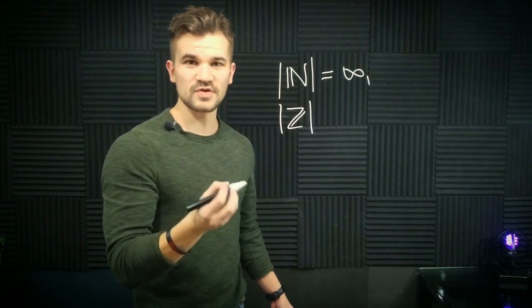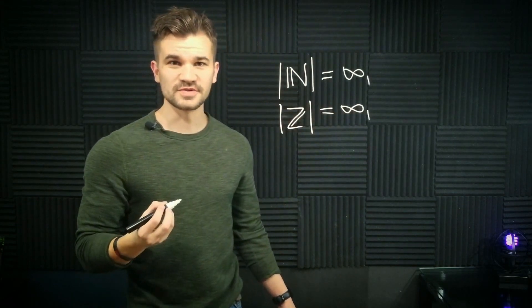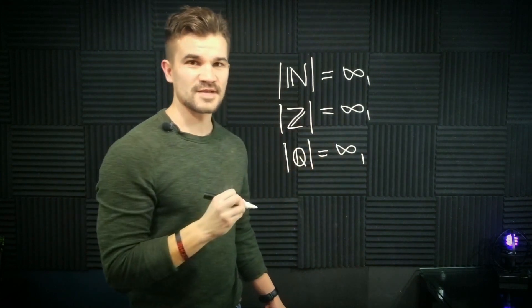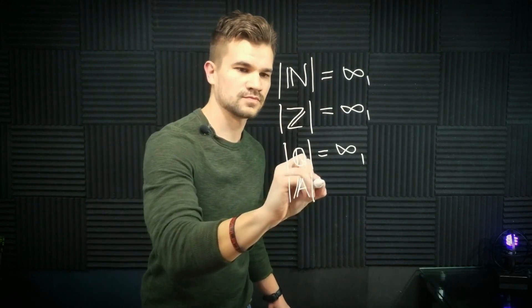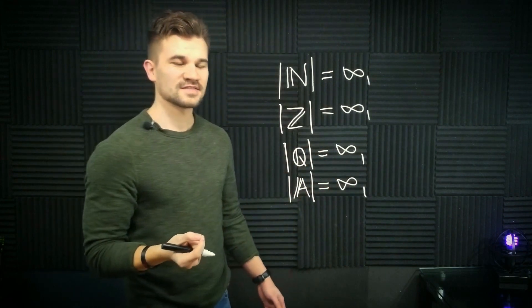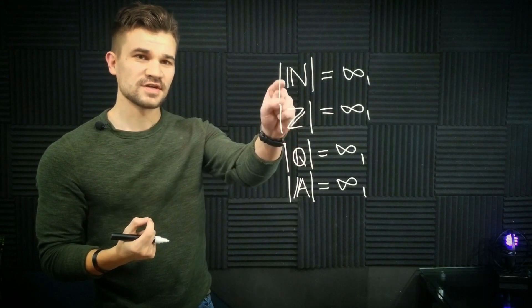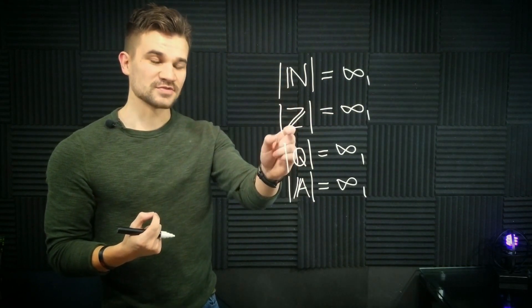Nope. Same cardinality. What about the rational numbers? Nope. Same cardinality again. What about the algebraic numbers? Nope. Same cardinality. All these sets have the same cardinality. In other words, we can form a bijective function from the naturals to the integers, from the integers to the rationals, from the rationals to the algebraics.